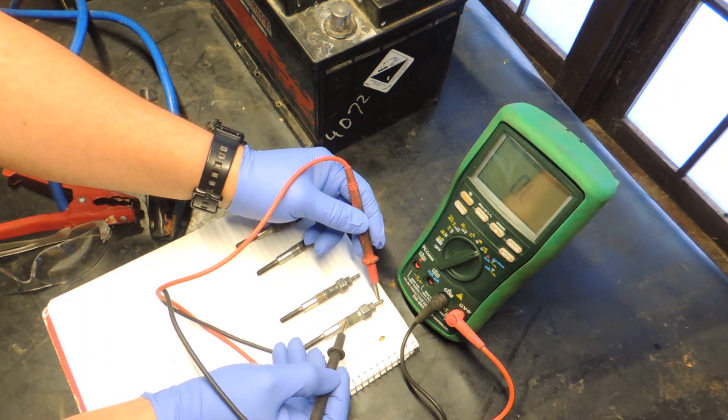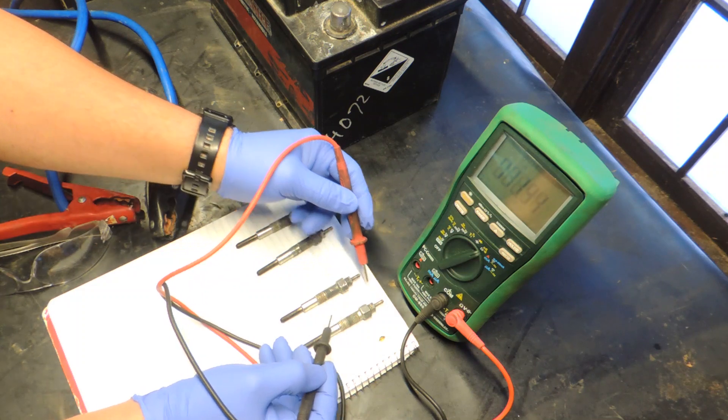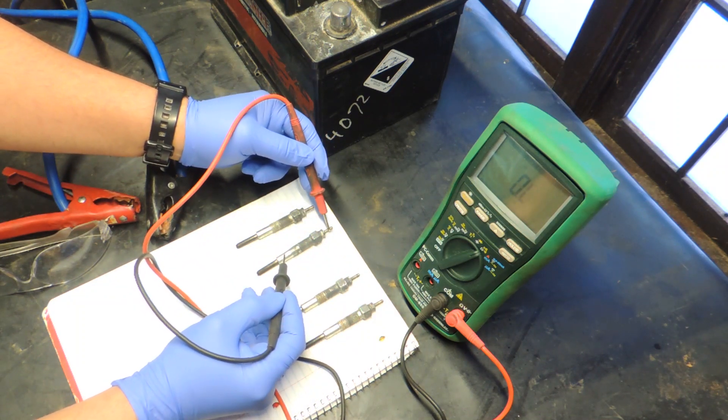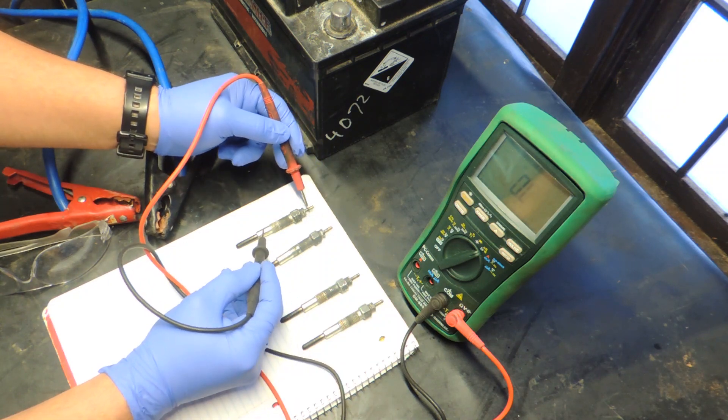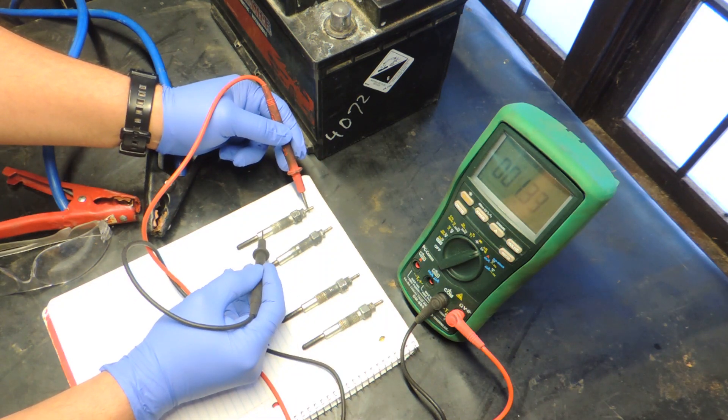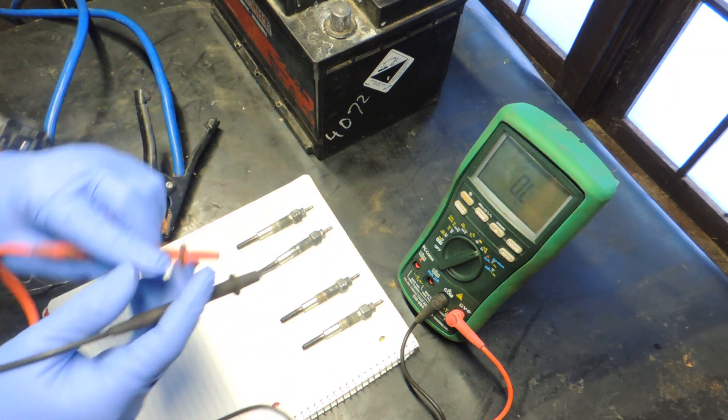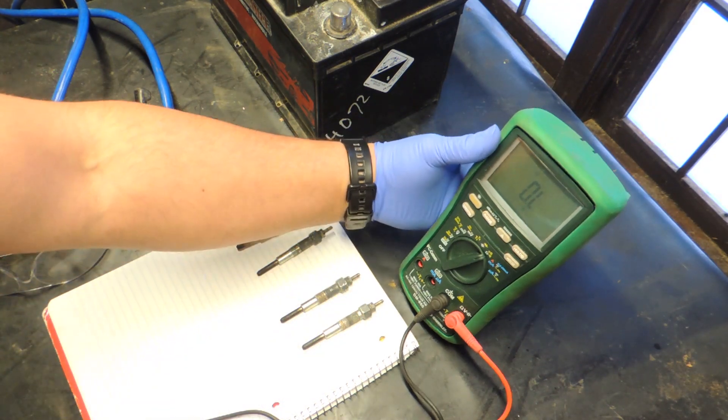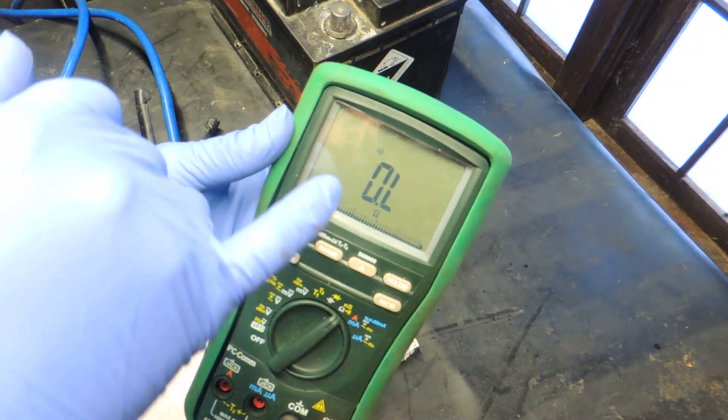We were checking the continuity, that's good. First, second, third and fourth, okay continuity is there and electricity can flow. If you see that OL sign that's not good, open circuit, then we don't need to do any other tests for that glow plug.